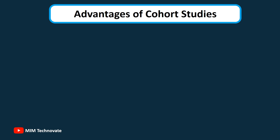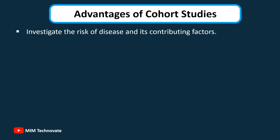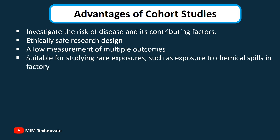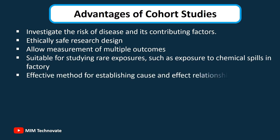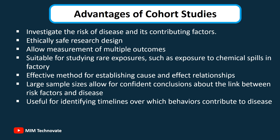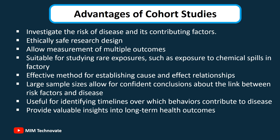Advantages of cohort studies: Cohort studies directly investigate the risk of disease and its contributing factors. They represent an ethically safe research design and allow measurement of multiple outcomes. They are suitable for studying rare exposures, such as exposure to chemical spills in a factory, and are an effective method for establishing cause and effect relationships. Large sample sizes allow for confident conclusions about the link between risk factors and disease, and they are useful for identifying timelines over which behaviors contribute to disease and can provide valuable insights into long-term health outcomes.